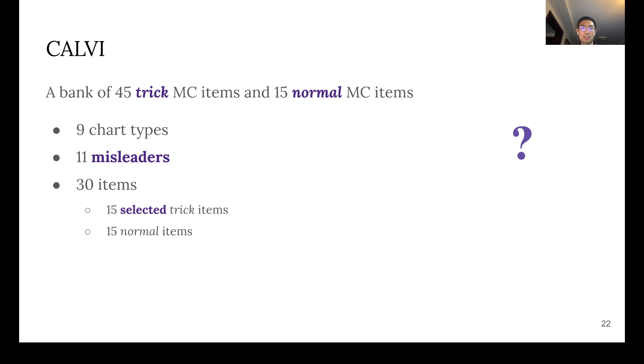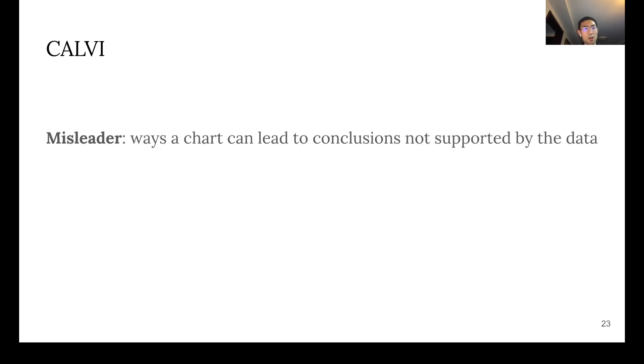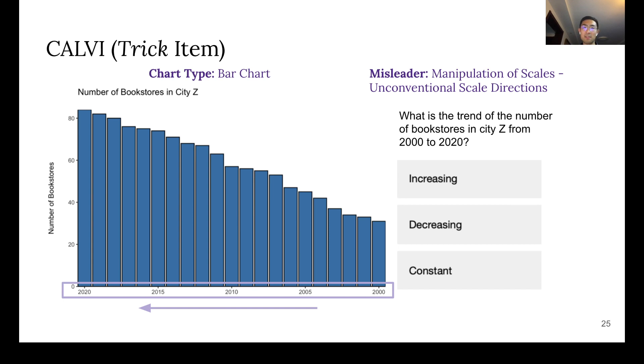You're probably wondering what these words mean, and let's begin with misleaders. Misleaders are ways a chart can lead to conclusions not supported by the data. And the trick item is an item whose visualization contains a misleader. Here is an example of a trick item that has an unconventional scale direction for the x-axis that may mislead the viewer to incorrectly infer the trend of this bar chart.